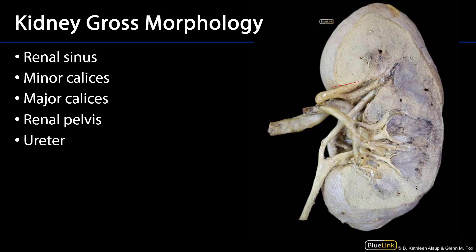This space here contains branches of the renal artery — segmental arteries and interlobar arteries — as well as veins which are not pictured here, as well as elements of the excretory pathway, so minor calyces and some major calyces. This is the renal sinus — the space beyond the hilum of the kidney, surrounded by parenchyma, through which neurovasculature as well as perirenal adipose connective tissue is found.